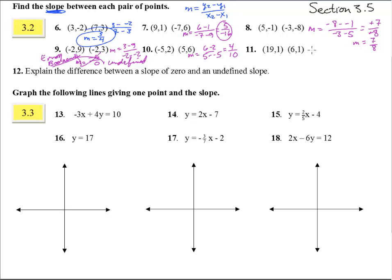Number 11, 1 minus 1 over 6 minus 19, that's 0 over negative 13. Punch that in your calculator and you will end up with a 0, so the slope is 0 here.